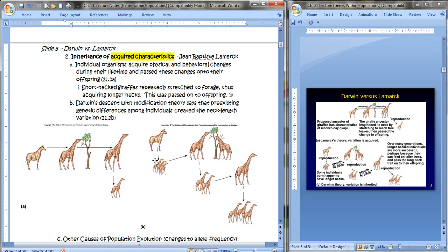Darwin instead said that there was pre-existing variation or genetic differences among the individuals which created variation in their offspring. Those that had the longer necks gave birth to those with longer necks, etc. And this would be how the populations would change over time. And this PowerPoint slide over here explains that, so if you'd like to pause for a second to read it over, feel free.